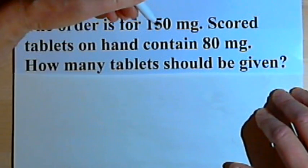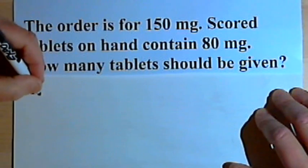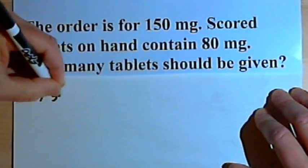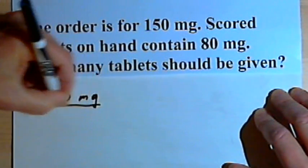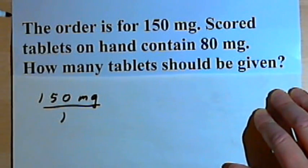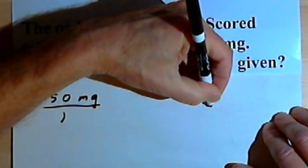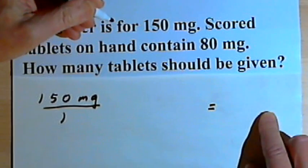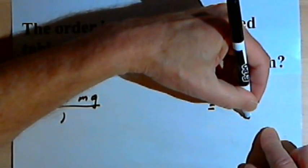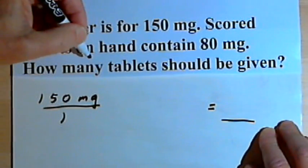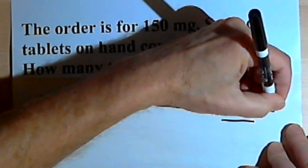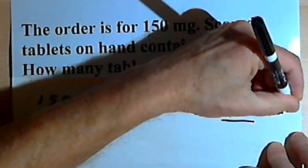The order was for 150 milligrams. So I'll write 150 milligrams. I'll put that over 1, since I'll be dealing with fractions. On the right side of my equation, I'll leave a space for the answer, and the unit is going to be tablets. So it'll be some number of tablets.